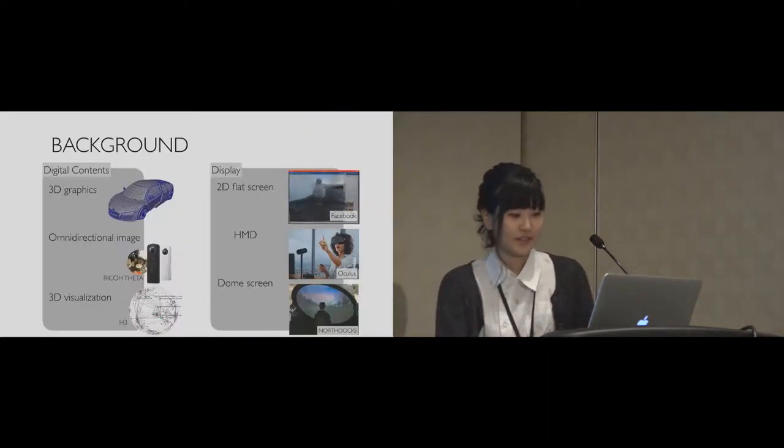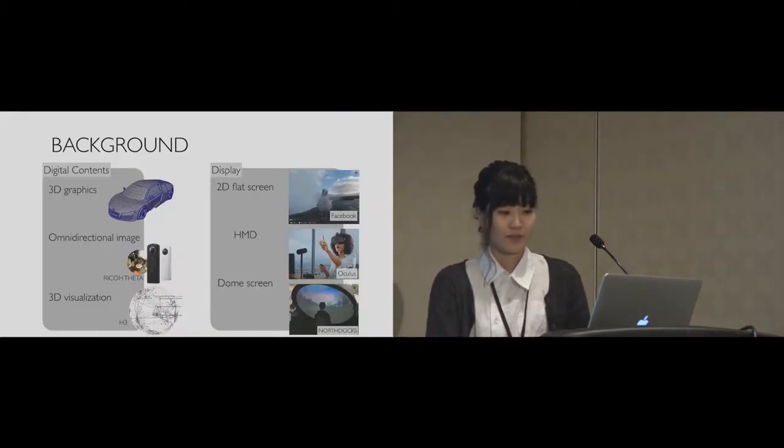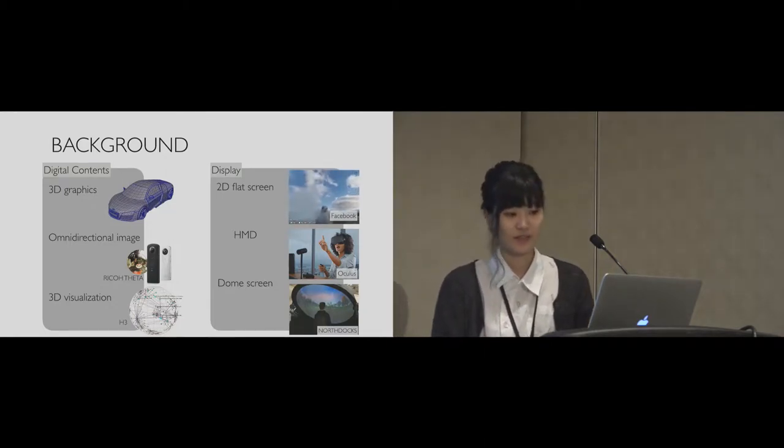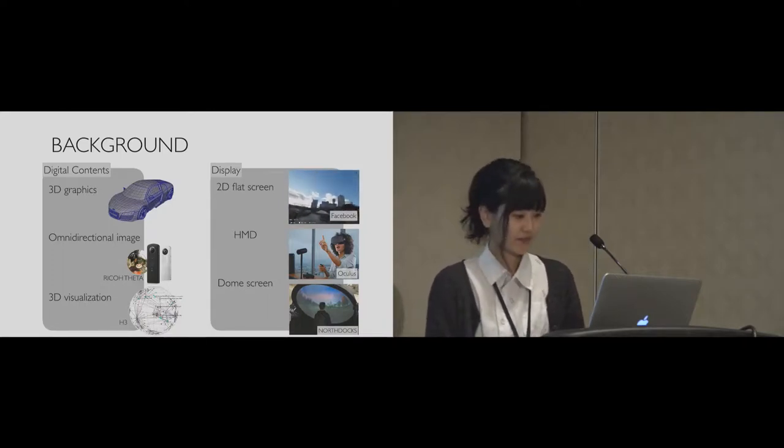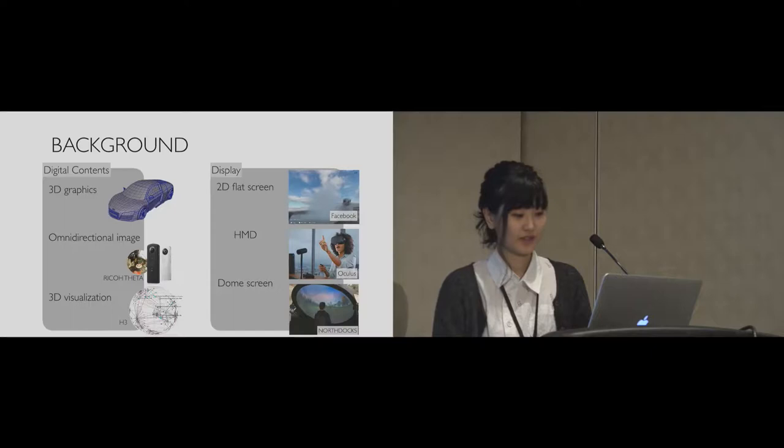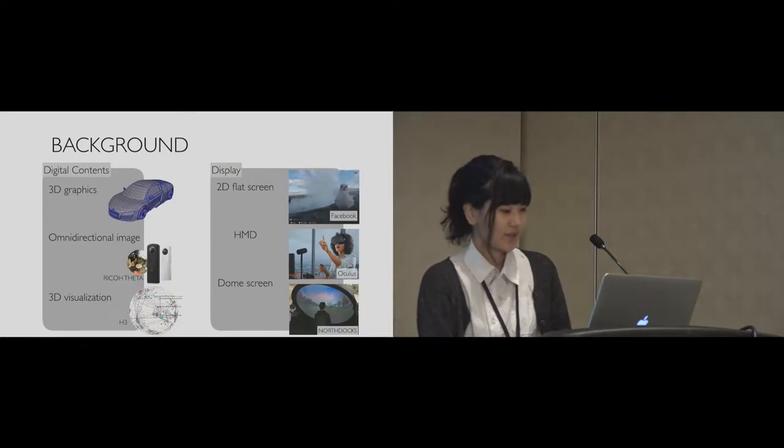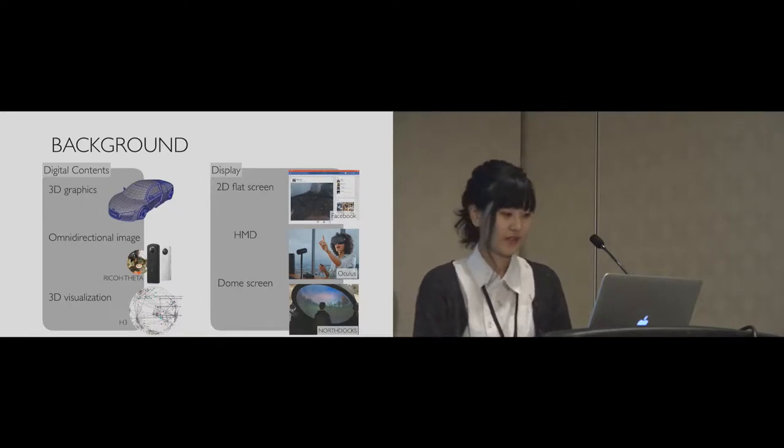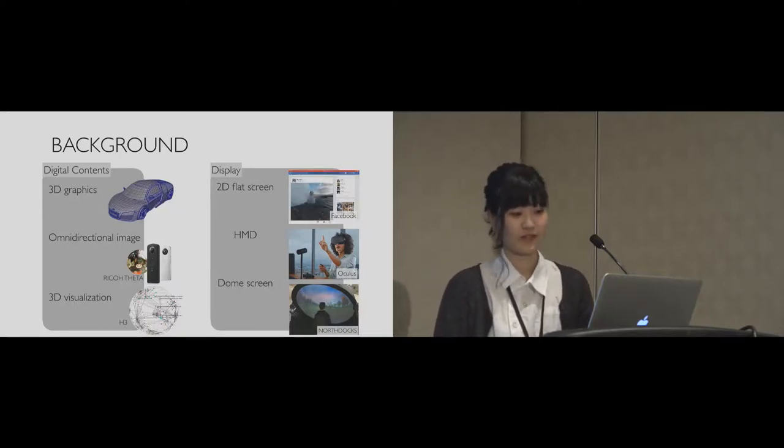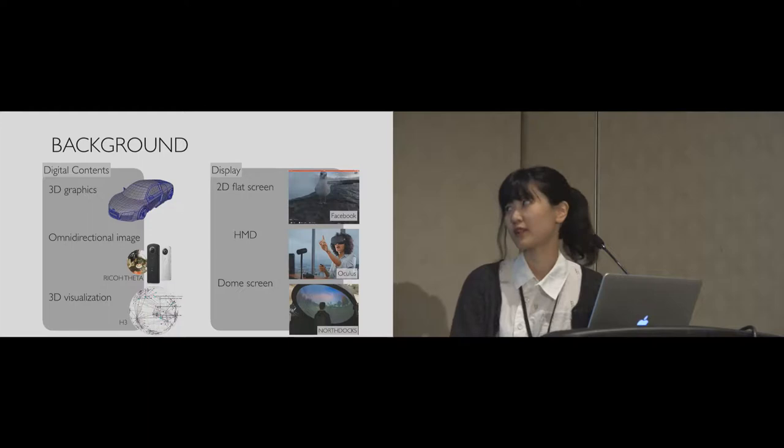In recent years, computer systems have been developing greatly, and digital contents have changed from conventional 2D images to 3D graphics. Omnidirectional images and 3D visualizations are examples of the contents. Today's displays to show them are 2D flat screens, VR HMDs, and dome screens, and people have been struggling to match these contents with suitable displays.